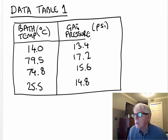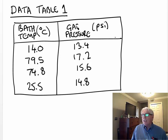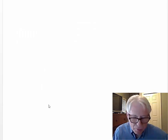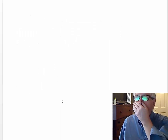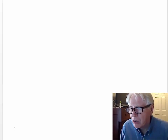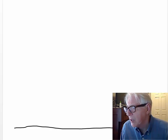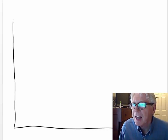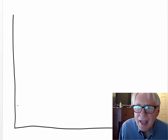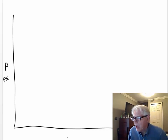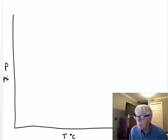None of our data goes anywhere near absolute zero, so we need to extrapolate. We're going to plot a graph — full scale, with a border of three or four steps from each edge. The vertical axis is pressure in PSI and the horizontal axis is temperature in degrees Celsius.